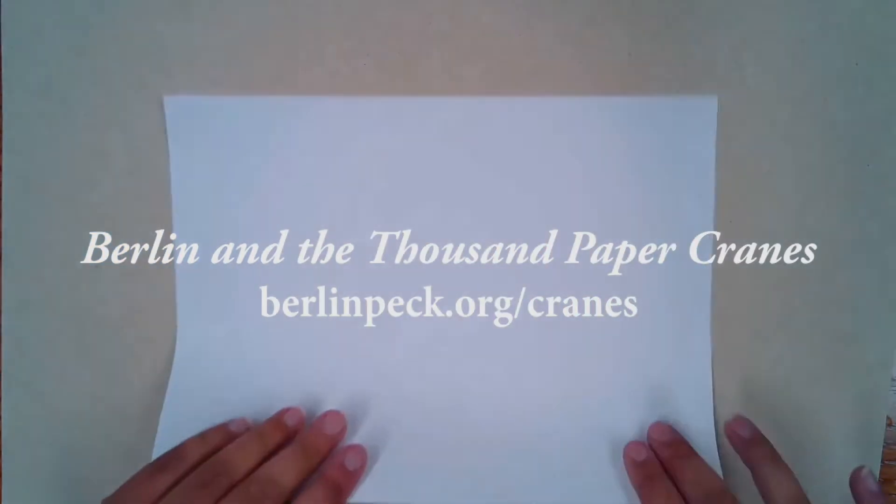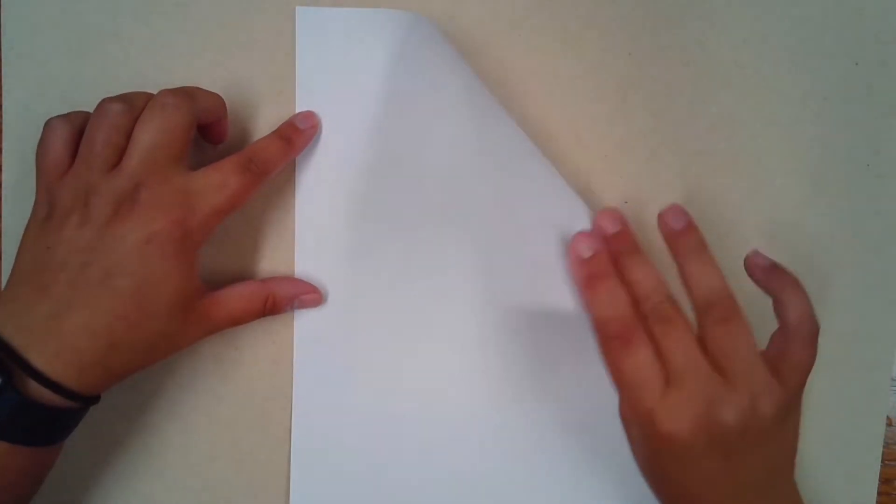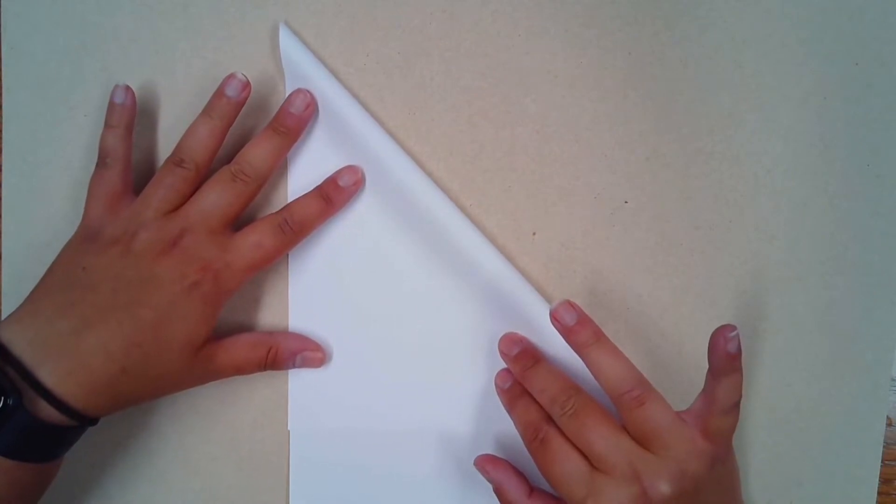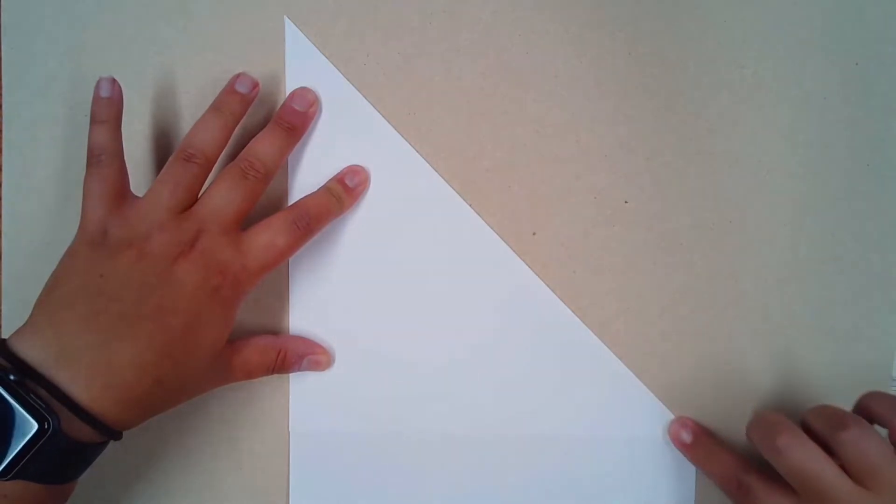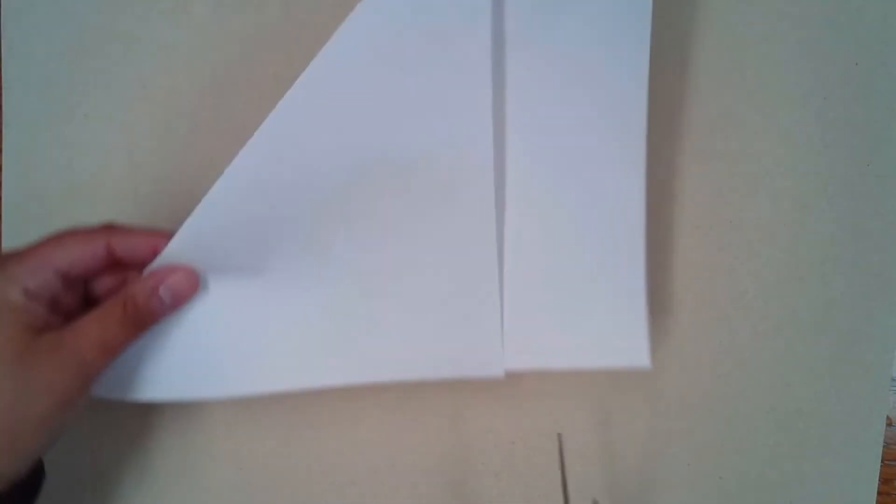So if you're starting out with a rectangle piece of paper, you are going to need a square. In order to make it into a square, fold one edge down to meet the side. And then you're just going to take scissors and cut off this bottom portion.